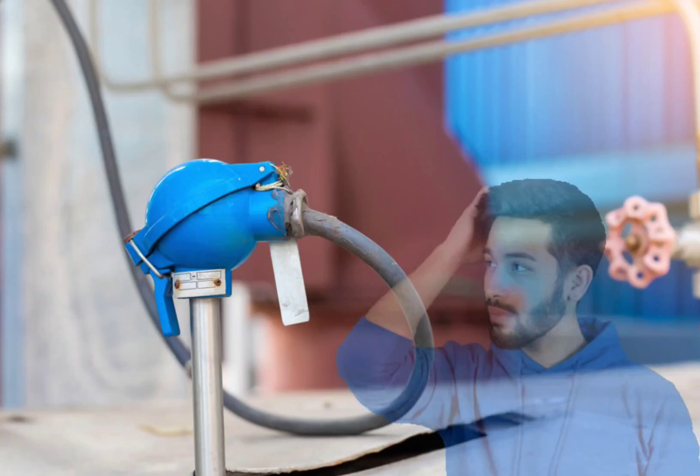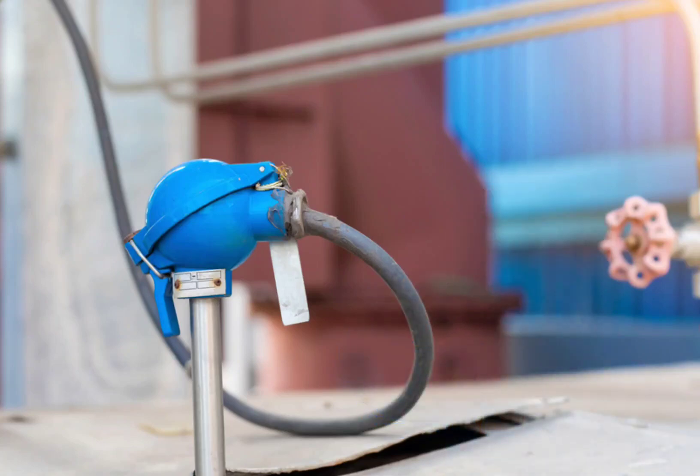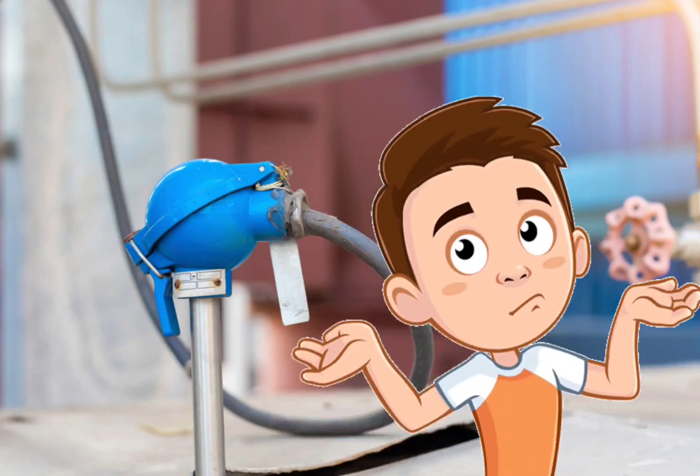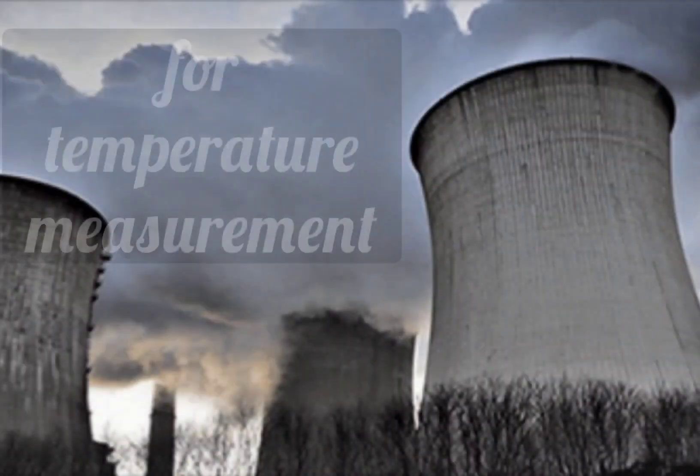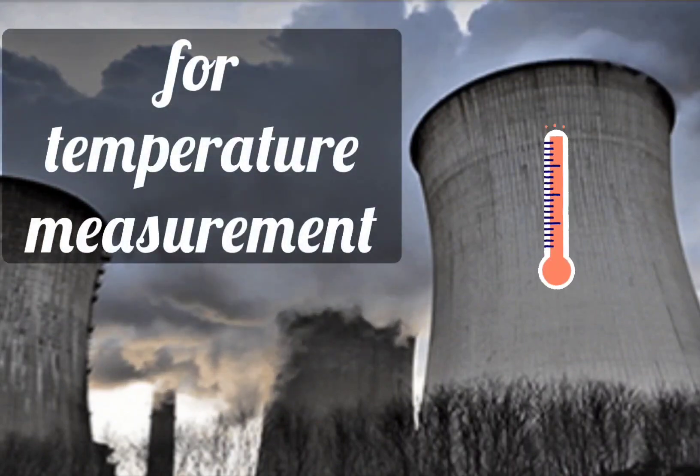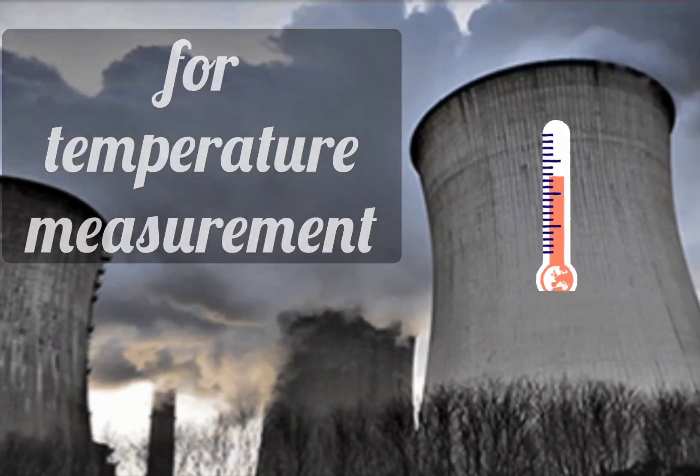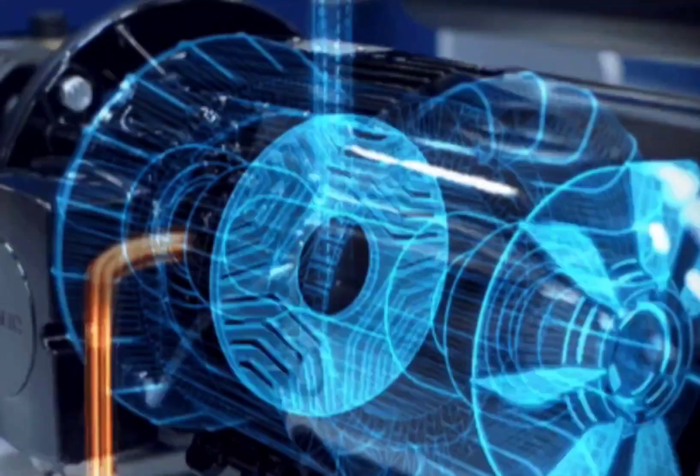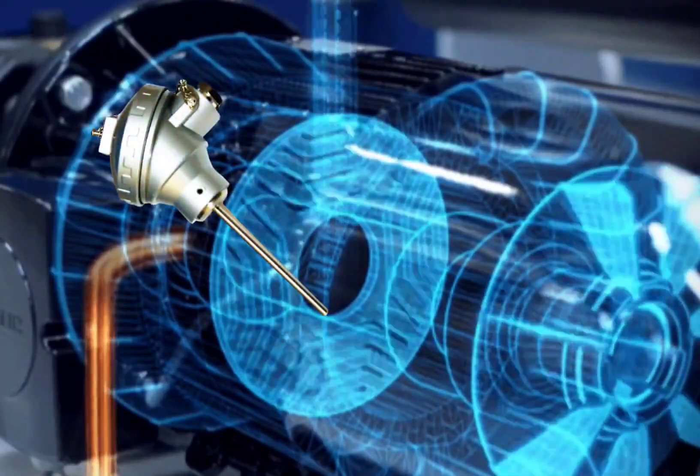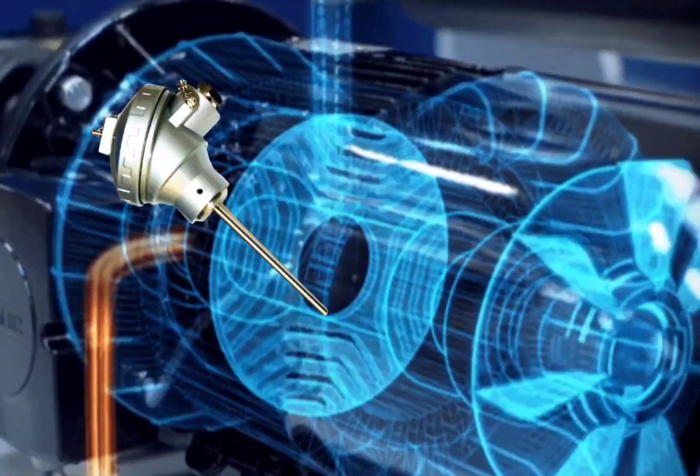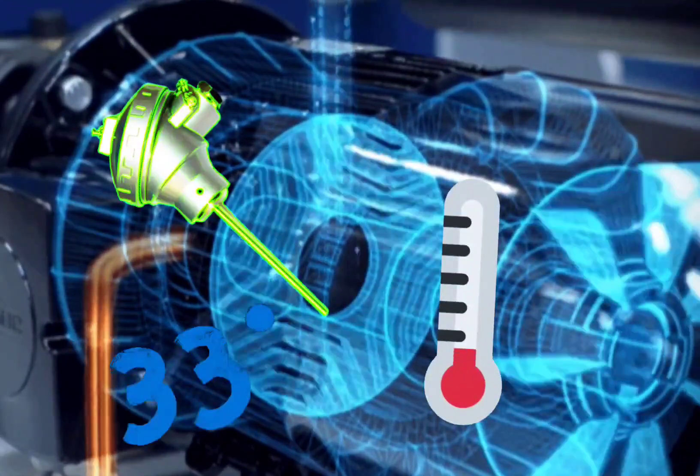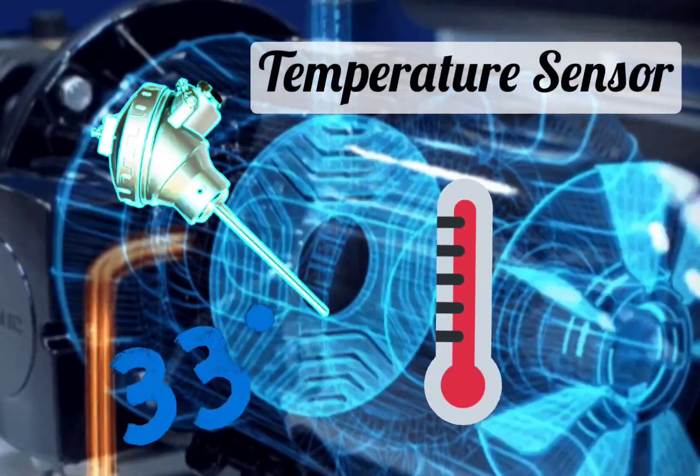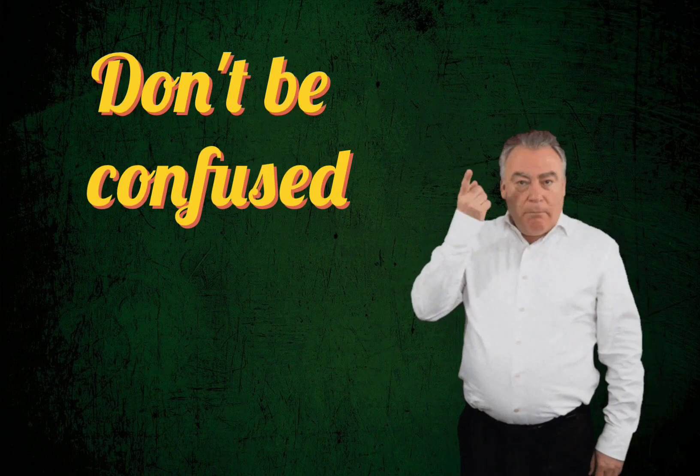Before knowing how to install RTD, we will see where we install it. We install RTD at a place where we need to measure temperature, means on any tank or in any process line. We install the RTD because RTD is measuring the temperature, so RTD is also known as temperature sensor.